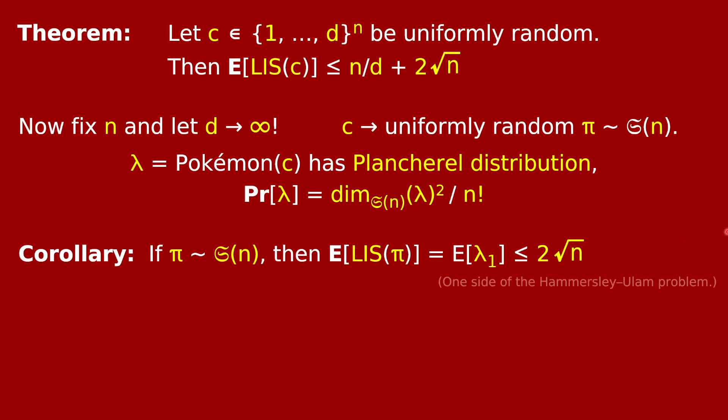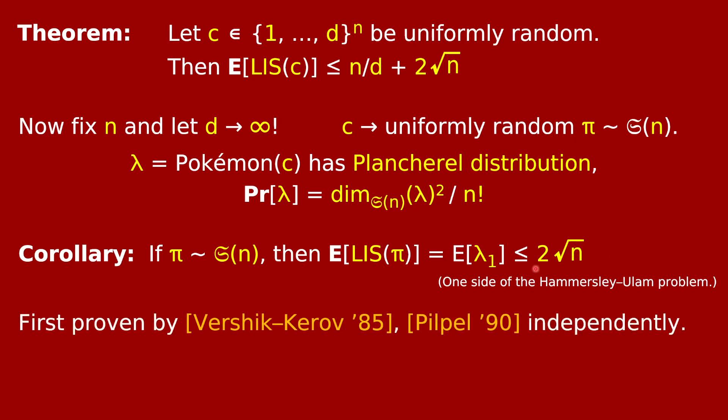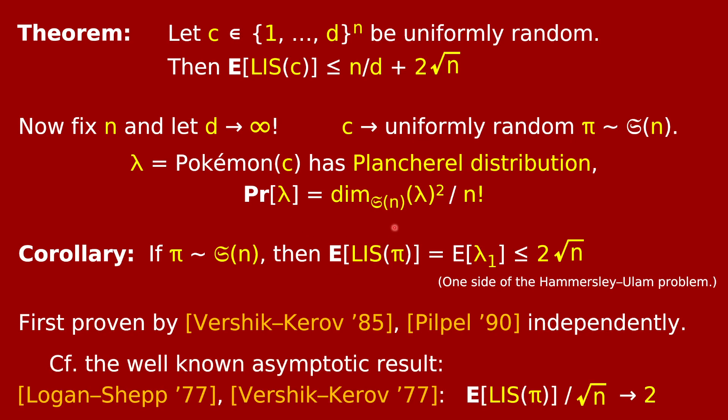That holds for every n. This is one side of the known results about the famous Hammersley-Ulam problem of the longest increasing subsequences in random permutations. This corollary, that the LIS is at most 2 root n in expectation, was first proven by Vershik and Kerov in 1985 and independently by Pilpel in 1990. It can be compared with the well-known asymptotic results about the length of the longest increasing subsequence in a Plancherel distributed lambda, which was resolved by Logan and Shepp and Vershik and Kerov back in 77. They showed that the expected longest increasing subsequence length over square root n tends in the limit as n goes to infinity to 2. But this gives a concrete upper bound that is true for every value of n.